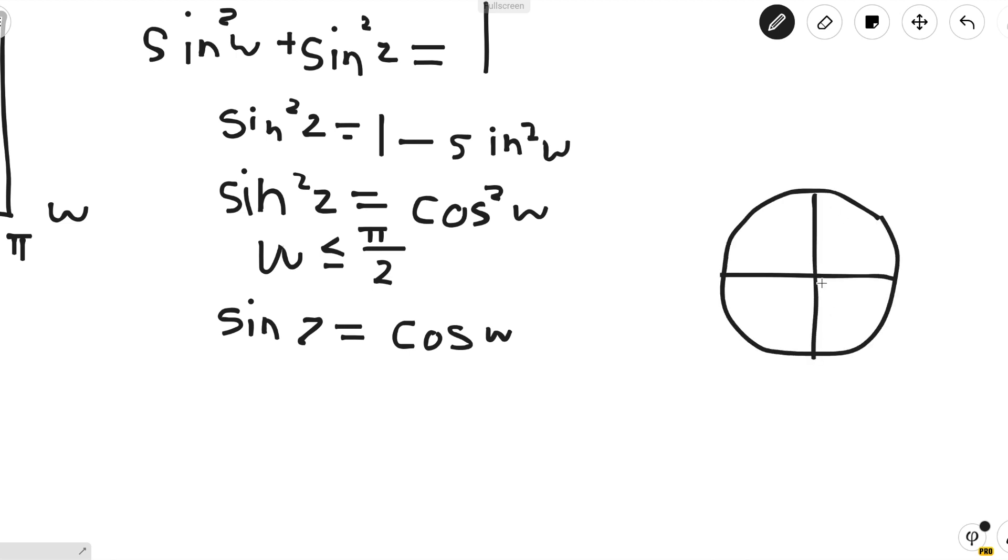let's say w is this angle over here, the cosine of that angle would be this. So we want sine of z to be the same as cosine of w. Now that happens in two cases: z is here or z is here.